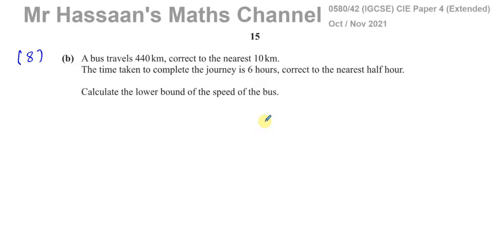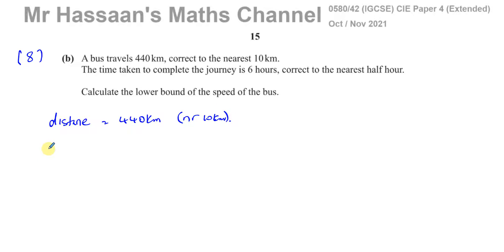It says a bus travels 440 kilometers correct to the nearest 10 kilometers. So the distance is 440 kilometers to the nearest 10 kilometers. The time taken is 6 hours, correct to the nearest half an hour, which we can say is 0.5 hours.